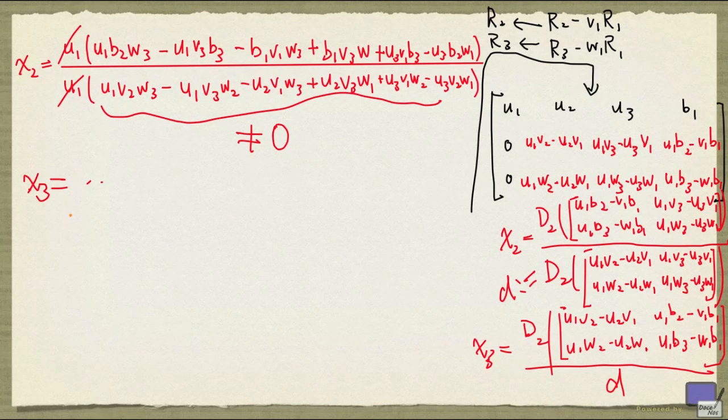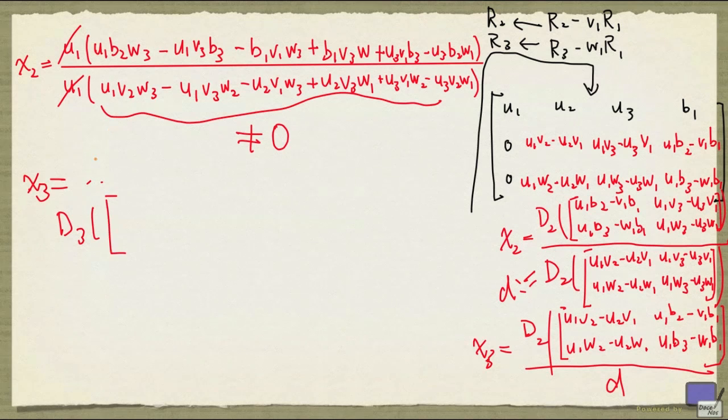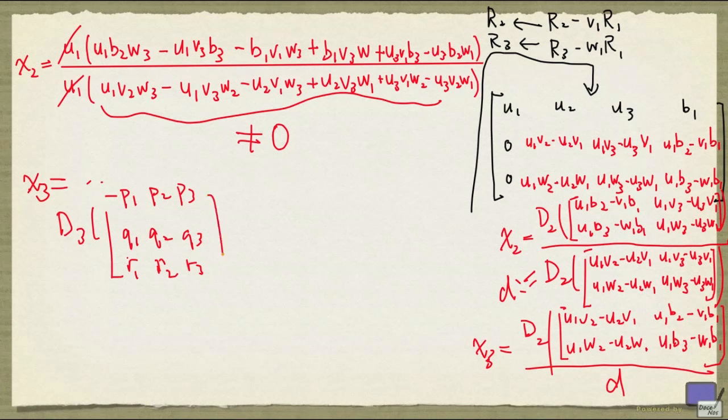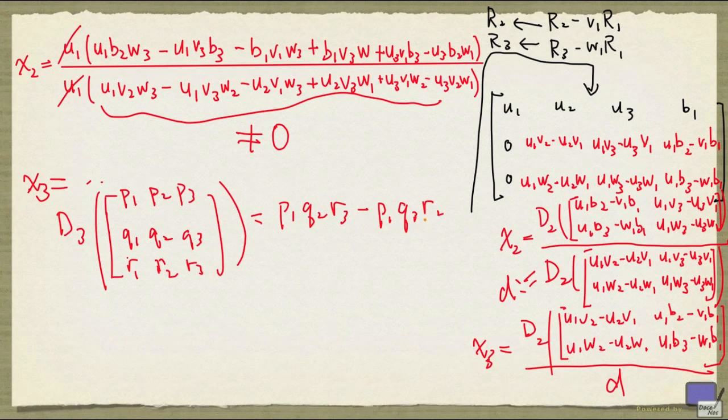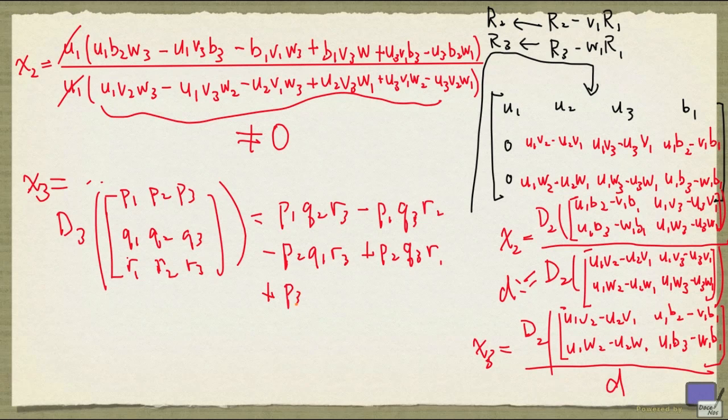But what I'm going to do is the following. I'm going to define d3 of p1 p2 p3, q1 q2 q3, and r1 r2 r3 to be the following: p1 q2 r3 minus p1 q3 r2 minus p2 q1 r3 plus p2 q3 r1 plus p3 q1 r2 minus p3 q2 r1.